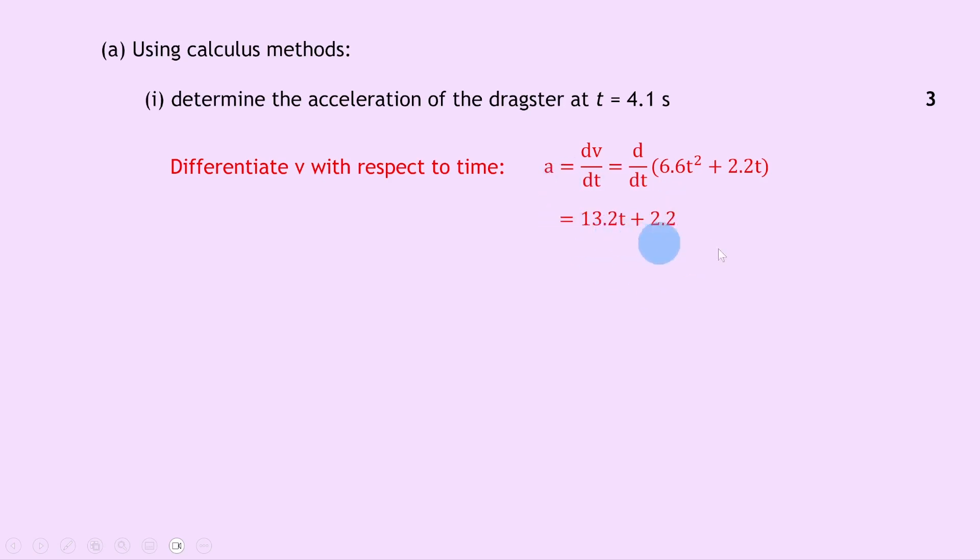Now we've got our acceleration expression, we want to substitute the time value, so we can say a equals 13.2 times 4.1 plus 2.2. Putting that into your calculator should give you an answer of 56 meters per second squared.